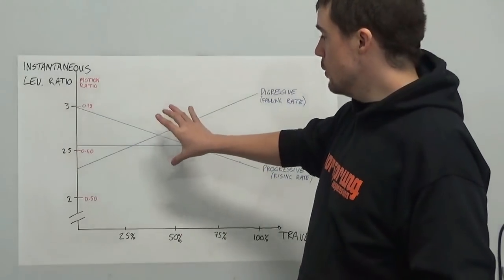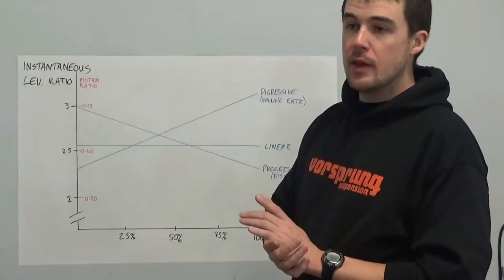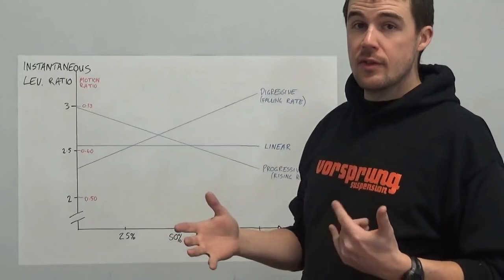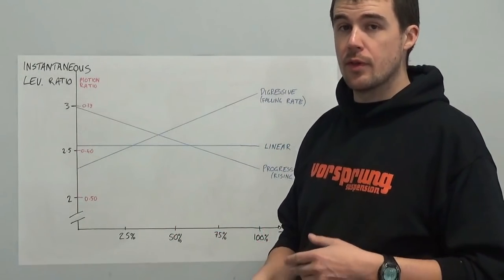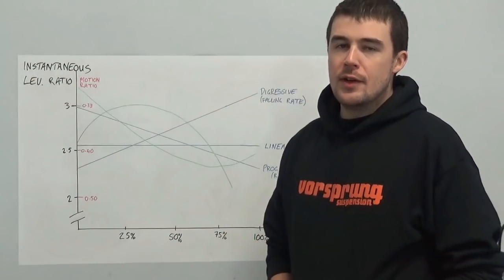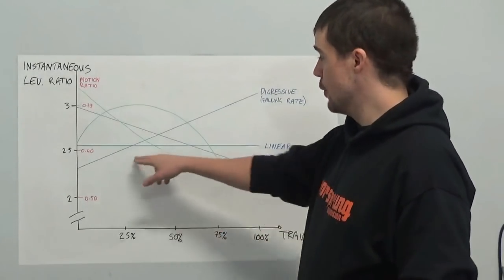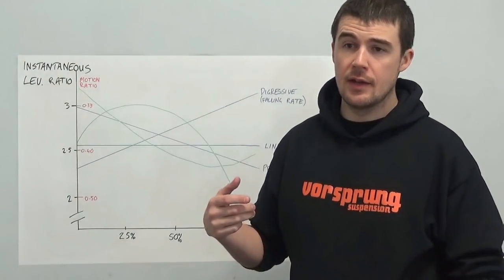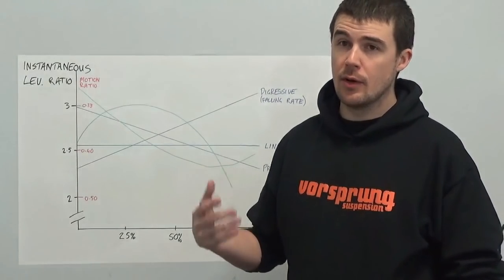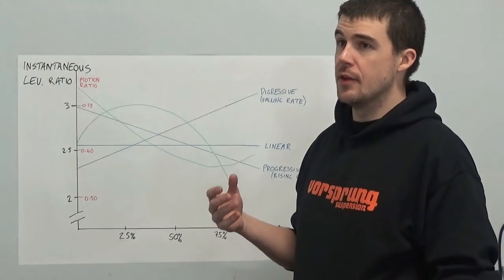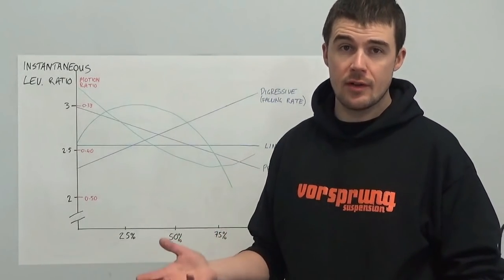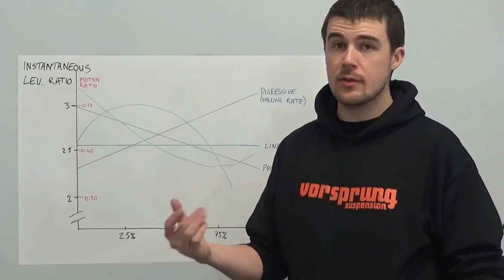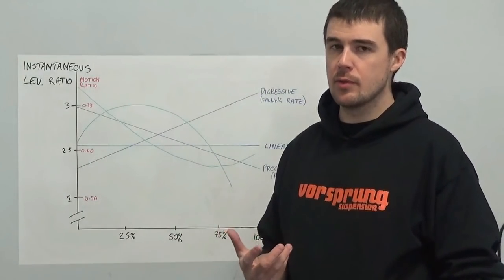Different bike manufacturers will use each of these in different parts of the travel. So what we end up with is curves that make use of all three of these aspects to suit the shock that they're working with, the use that they're going for. Now it is almost universally agreed upon that pure falling rates for rear suspension are pretty garbage. They are very stiff at the start of the travel and they are very easy to bottom out. There are only a handful of bikes that still use this. Usually it's paired with an extremely progressive rear shock like an air shock with very low volume in order to get the end stroke support that you need, or it's used to overcome an exceptionally progressive shock like that.